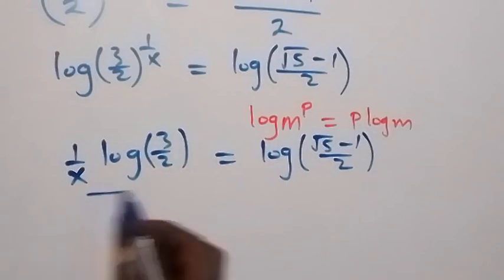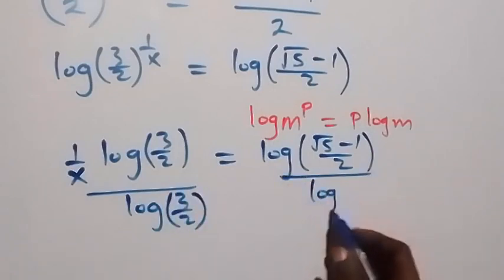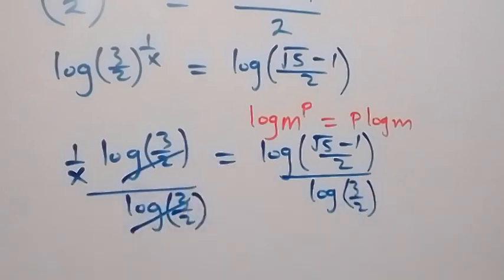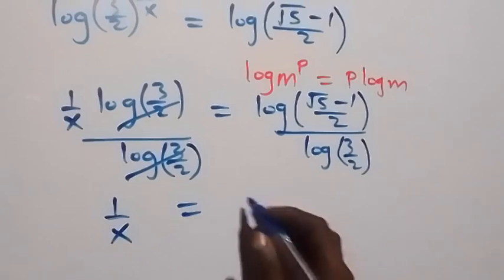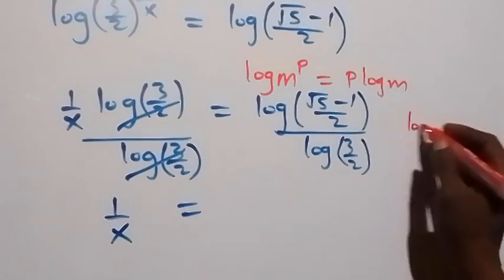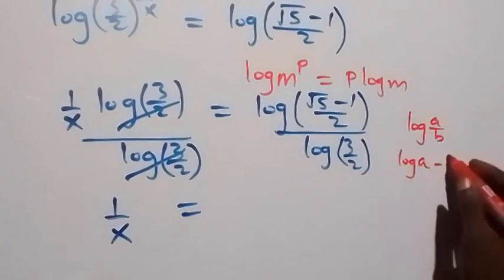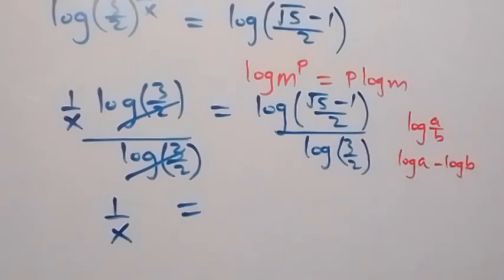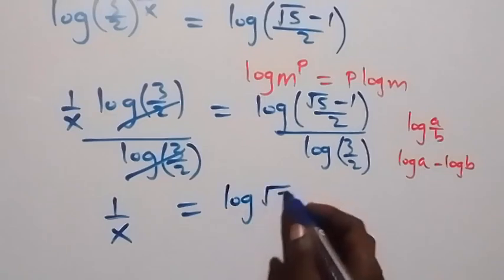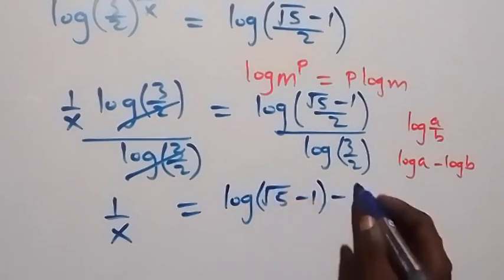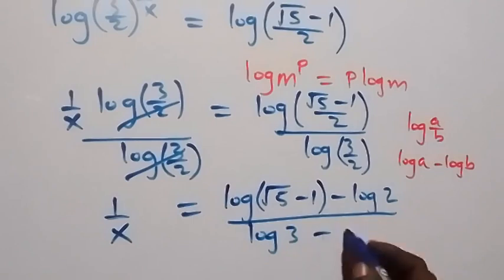From here we can divide both sides by log(3 over 2). The log(3 over 2) cancels out and we have 1 over x on the left. Using the law of logarithms, log(a over b) equals log a minus log b. So the right-hand side becomes: log(root 5 minus 1) minus log 2, divided by log 3 minus log 2.